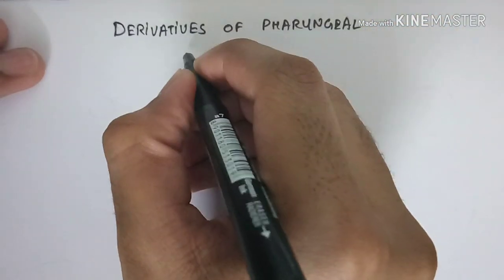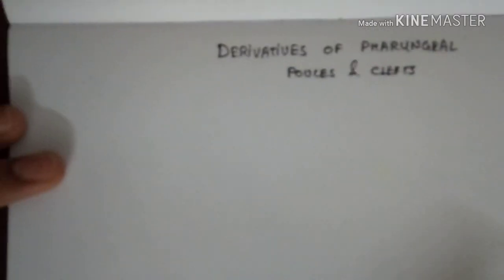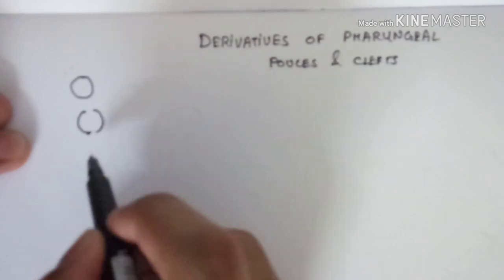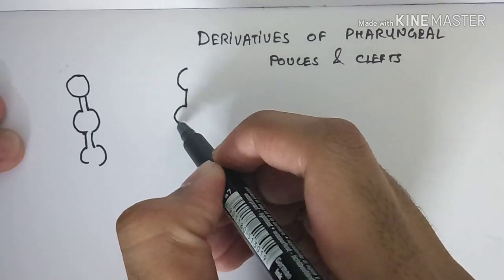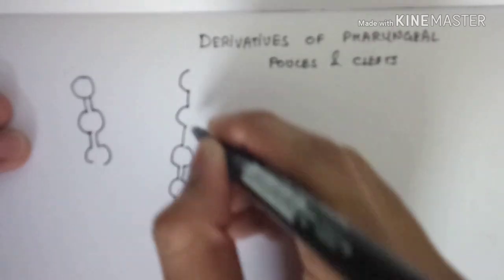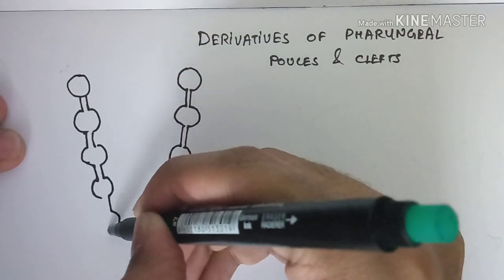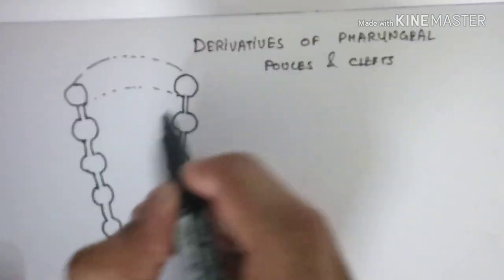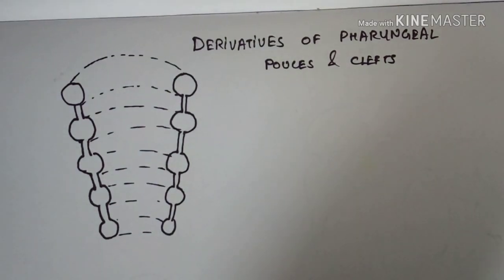Here are the derivatives. First we'll see the basic structure of the pouches and the clefts — their location, the content of the arches, where they are located in the body, and how many arches and clefts are present. There are a total of six arches; the fifth arch disappears, making a total of five functional arches: first, second, third, fourth, and sixth.